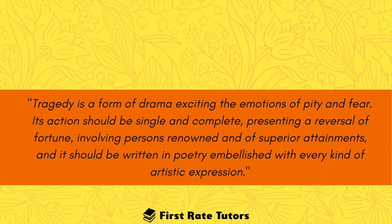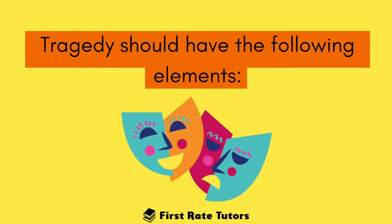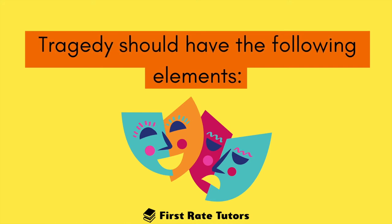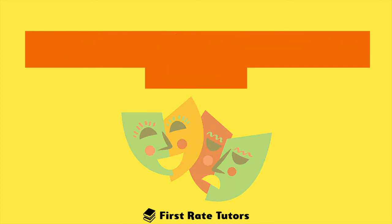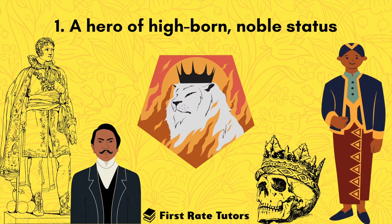To break this down into very simple language, essentially a tragedy should have the following elements, and we can summarize them as five main components. The first element is that a tragedy features a hero of highborn, noble status.